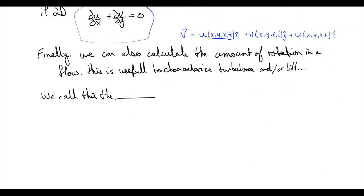And finally, we're going to calculate the amount of rotation in a flow. This is really useful to characterize turbulence and or lift. We call this the vorticity, which is a very important property in fluid mechanics. This is a vector quantity. Just like velocity is a vector quantity, this has a direction, and it measures the amount of rotation around each axis.